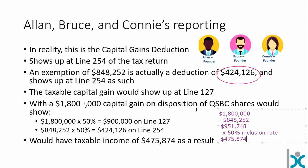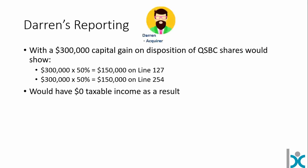For Darren, this is a little different because he only has a $300,000 capital gain. Taking $300,000 times 50%, he would show $150,000 of taxable capital gain. He would then show $150,000 of deduction — you can't take more deduction than the taxable capital gain you're reporting. So Darren ends up with no taxable income — he's been able to wipe it all out.